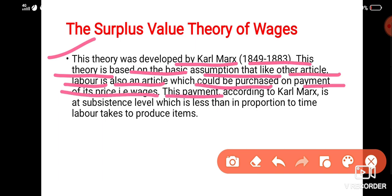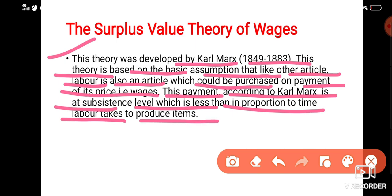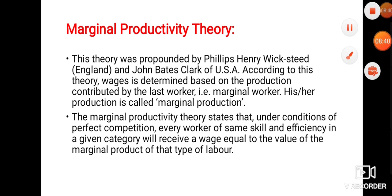According to Karl Marx, this payment to workers is kept at the subsistence level, which is less than the proportion of time labor takes to produce items. Workers are not fully compensated for the value they create, and this exploitation should not happen — workers should be paid according to their contribution to the organization.